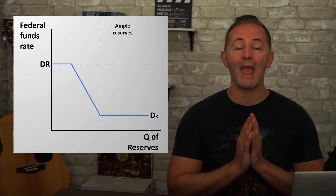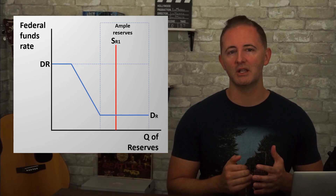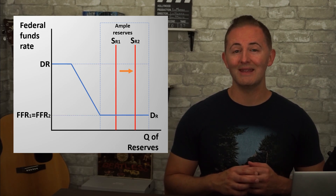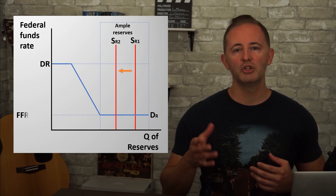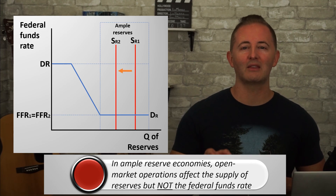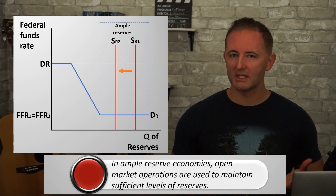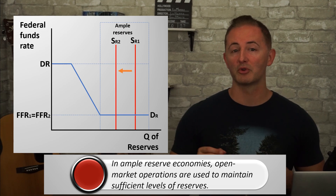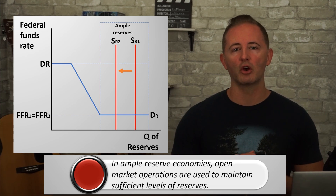The federal funds rate matters so much because it basically influences every other interest rate in the economy. The third section of the demand curve represents an economy with ample reserves. Notice what happens if we're in this section and the Fed conducts an open market purchase — the federal funds rate is unchanged. Same thing with an open market sale: no change in the federal funds rate. That means that in ample reserve economies, open market operations do not affect the money supply or nominal interest rates. Open market operations are still used, but their purpose is merely to maintain sufficient levels of ample reserves. You'll have to read questions carefully that mention open market operations because both their purpose and their effectiveness depend entirely on whether there are limited or ample reserves.